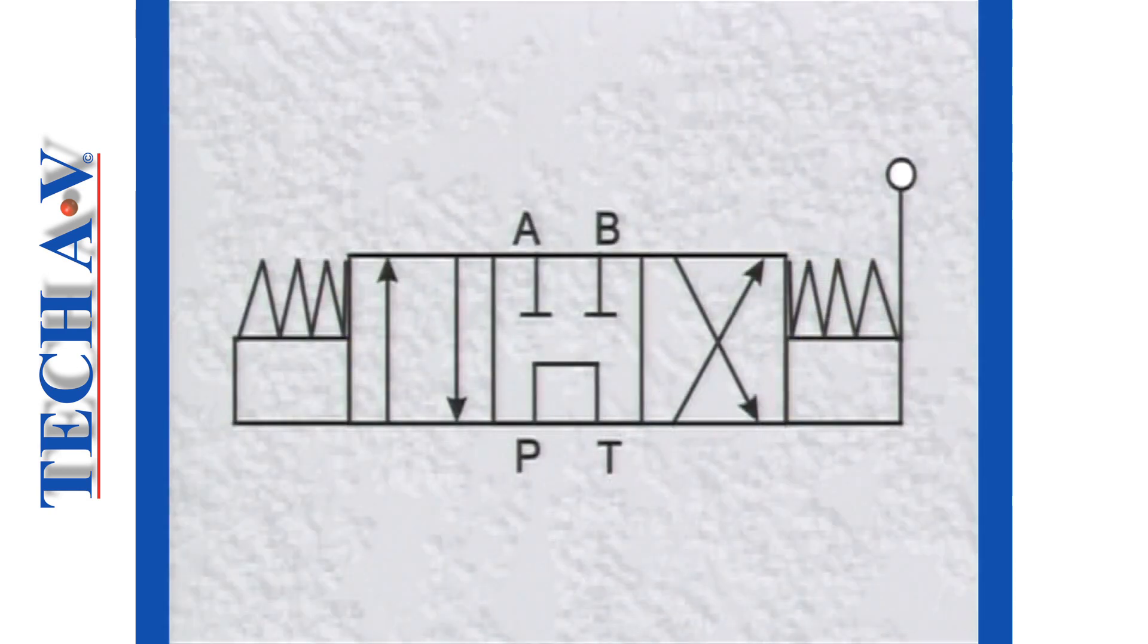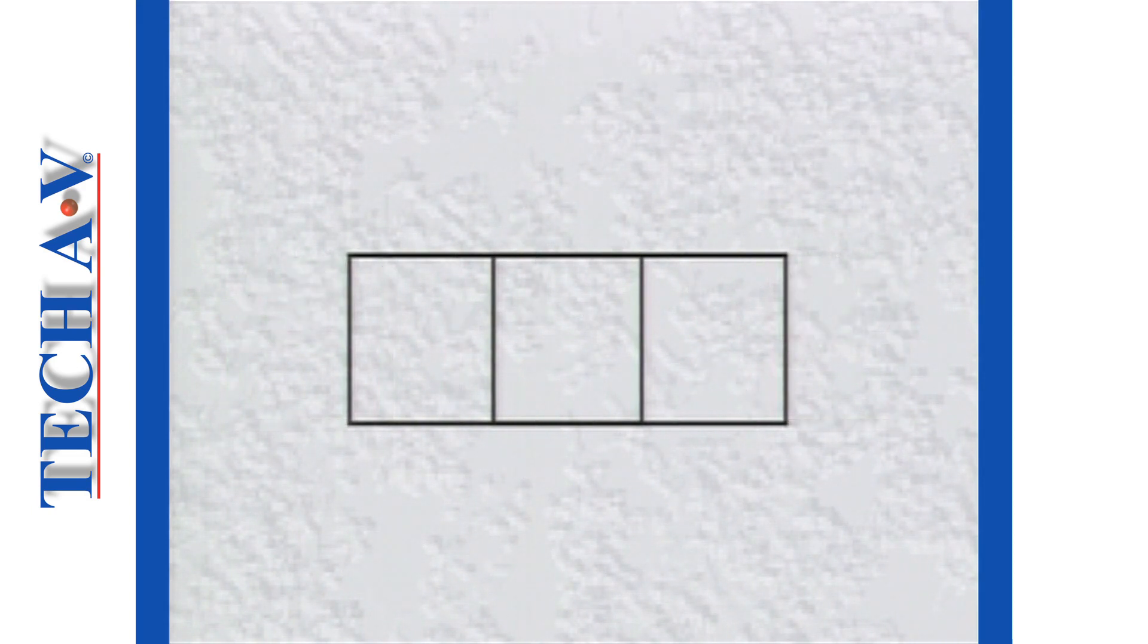The three envelopes indicate that the valve has three possible spool positions. Each envelope depicts the oil flow through the valve in that particular position.